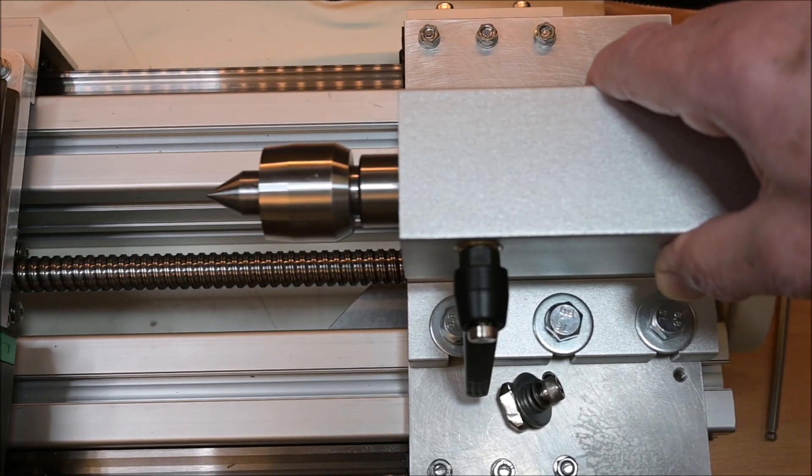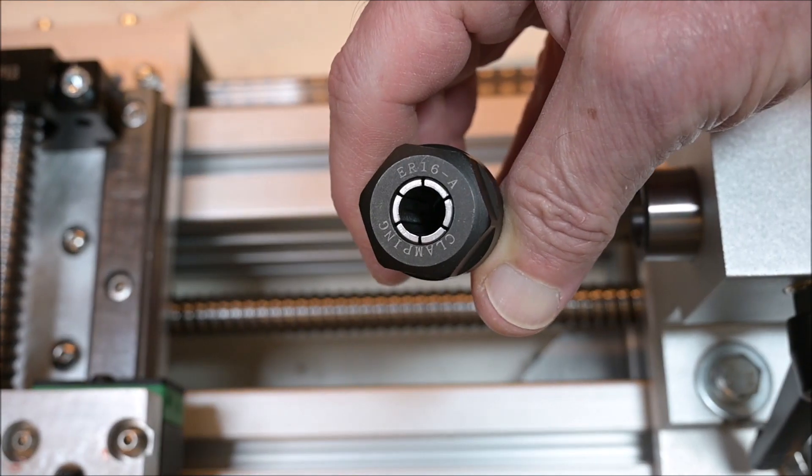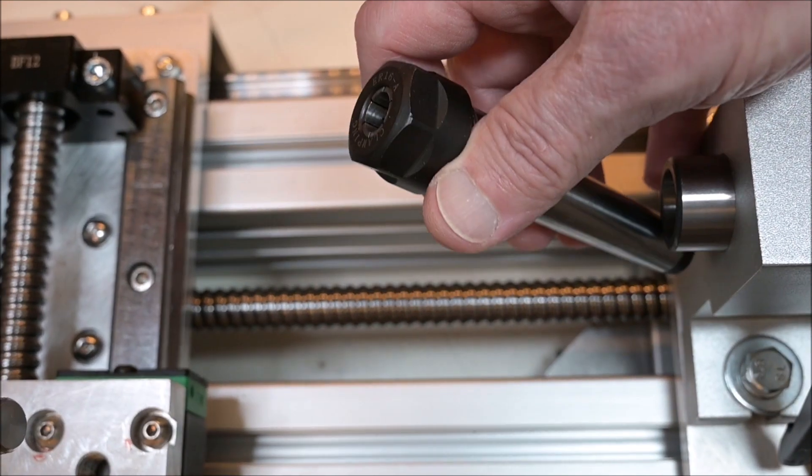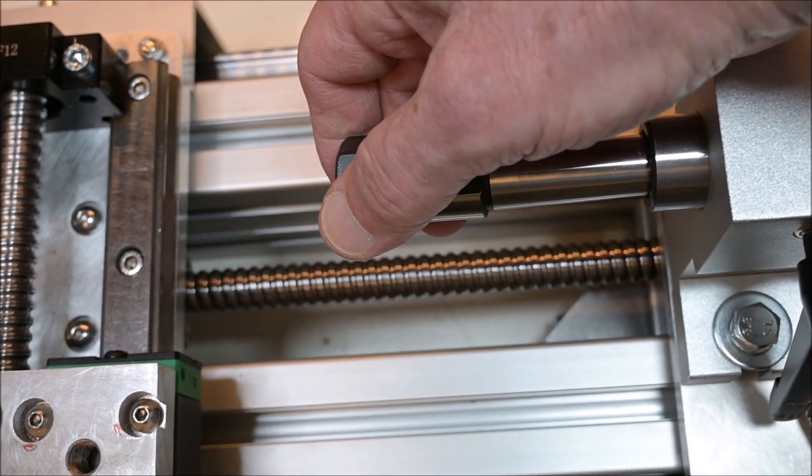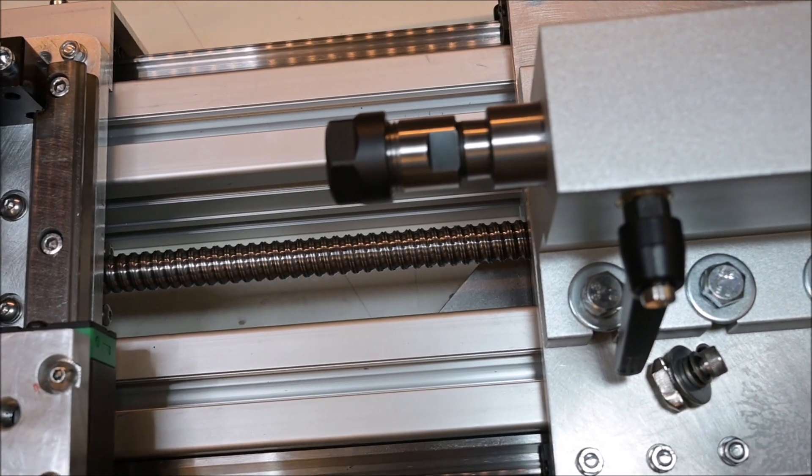The tailstock has an MT2 taper, so I actually bought also an AR16 collet chuck holder which I can use for drilling.